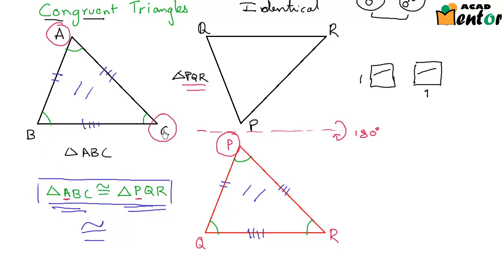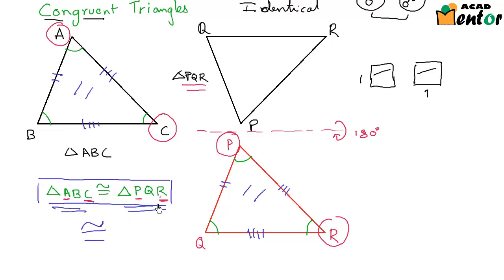Like C comes third in the naming of triangle ABC, and the vertex in triangle PQR which corresponds to C is vertex R, and hence R would also have to be third when writing the congruent conditions.